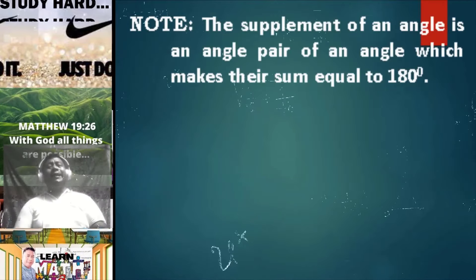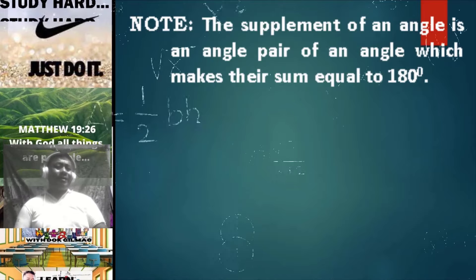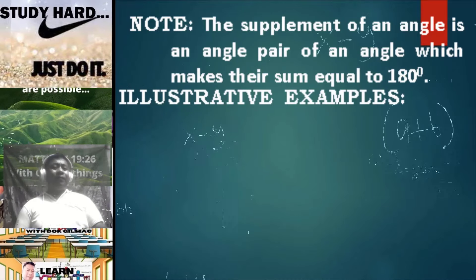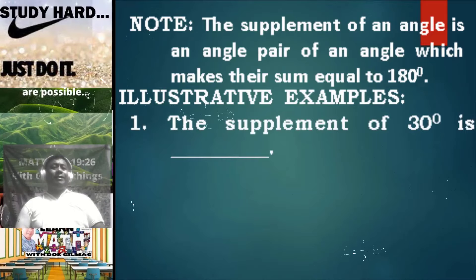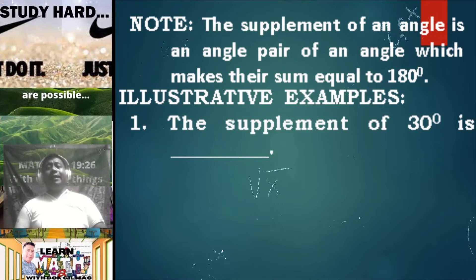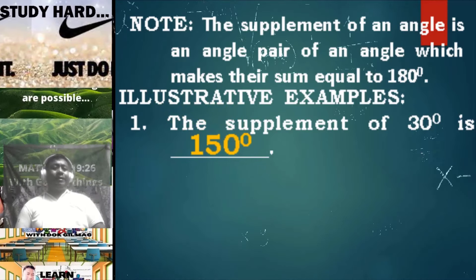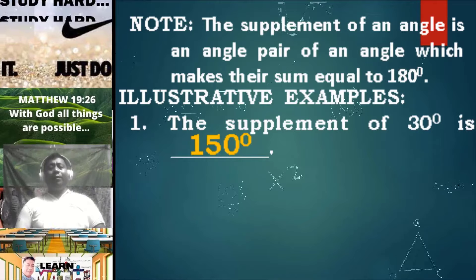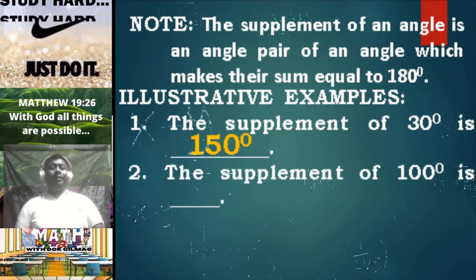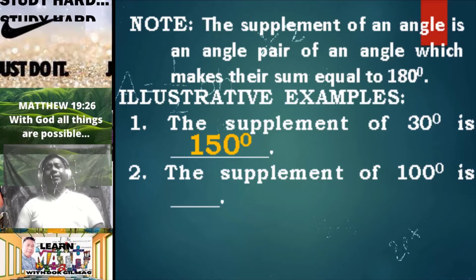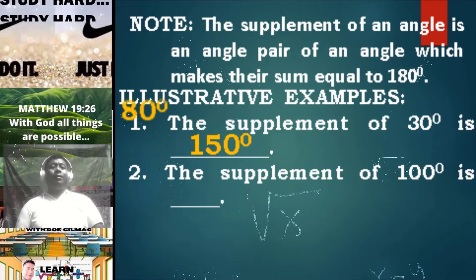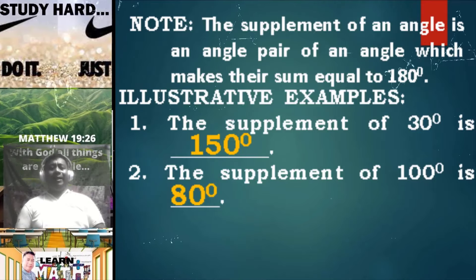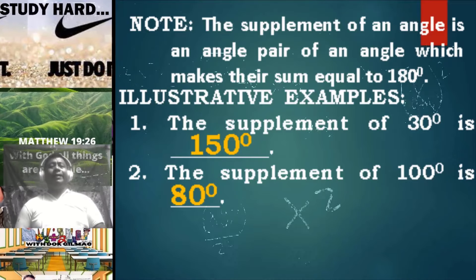The supplement of an angle is an angle pair of an angle which makes their sum equal to 180 degrees. Consider illustrative examples. The supplement of 30 degrees is 150 degrees, since 30 degrees plus 150 degrees is equal to 180 degrees. Number two, the supplement of 100 degrees is 80 degrees, since 100 degrees plus 80 degrees is just equal to 180 degrees.